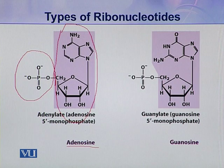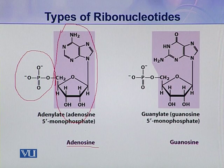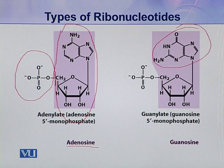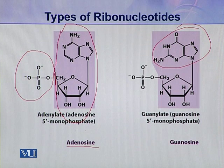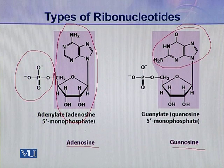The second type of ribonucleotide present in nucleic acids has guanine as its nitrogenous base. In this coloured portion, guanine joins with a pentose sugar and they make a guanosine.